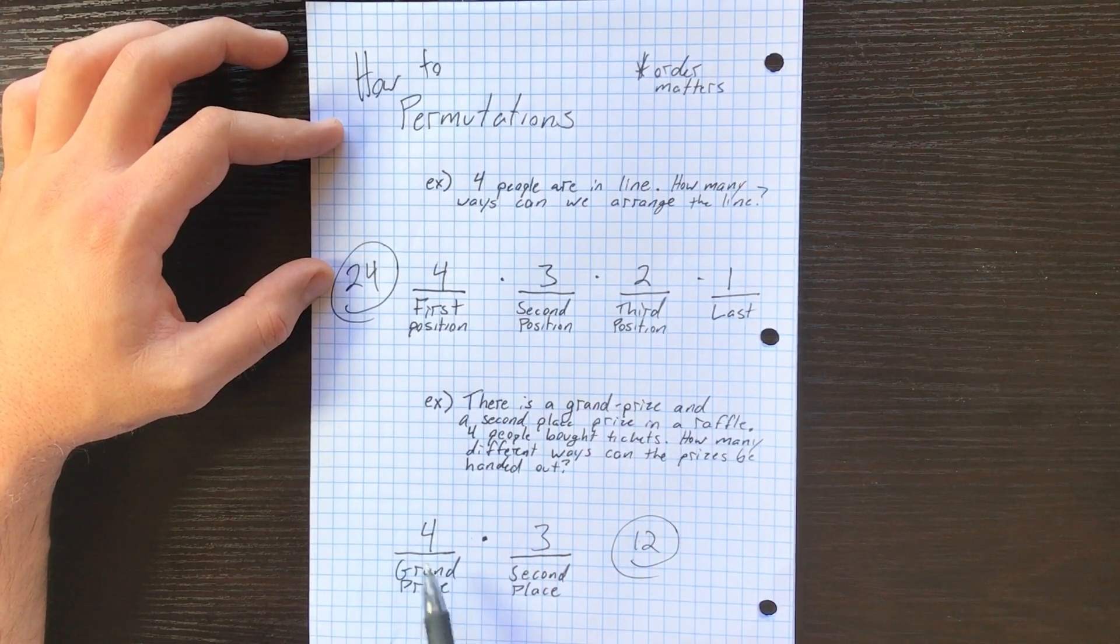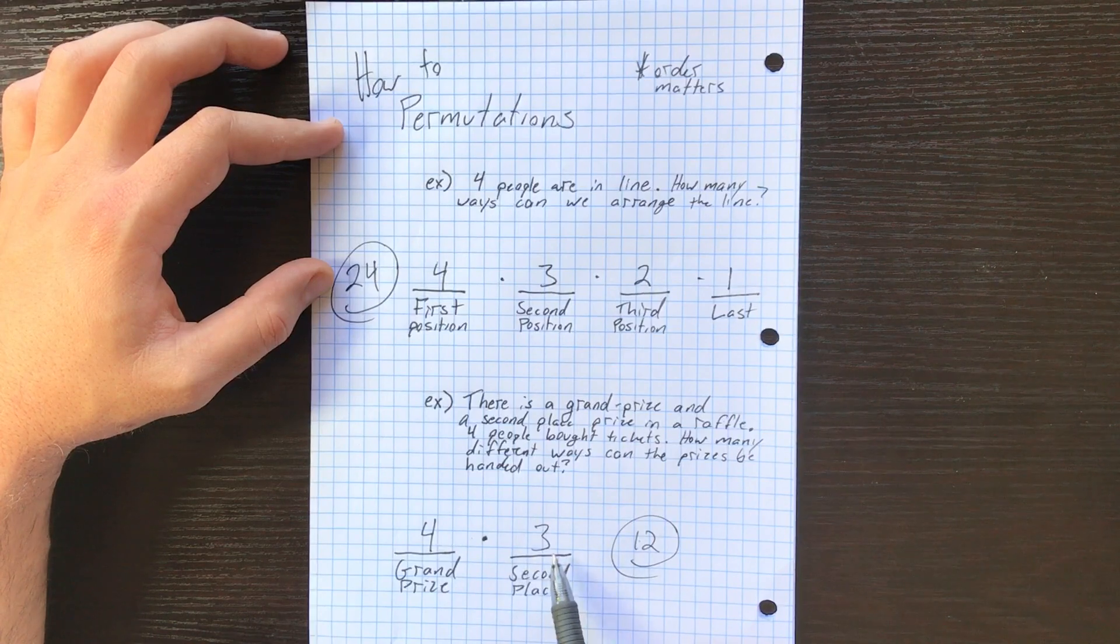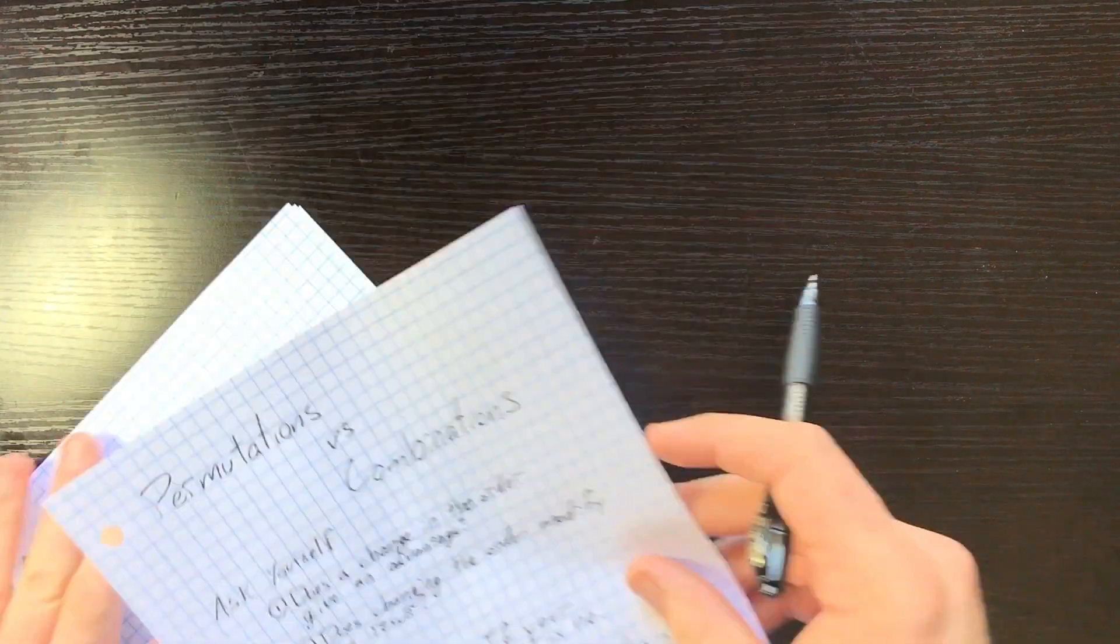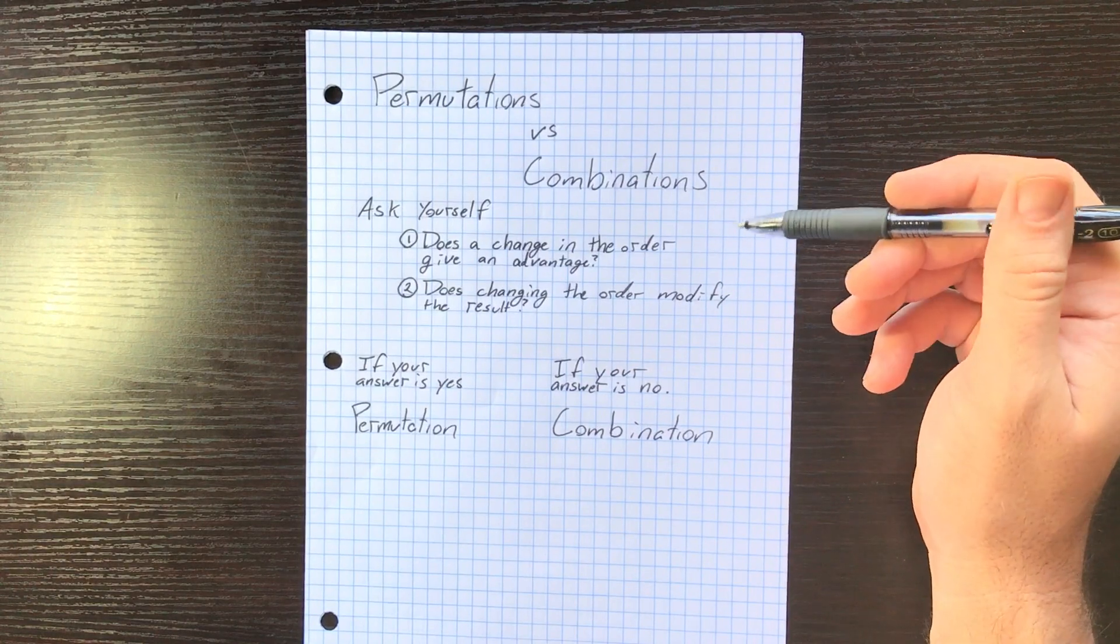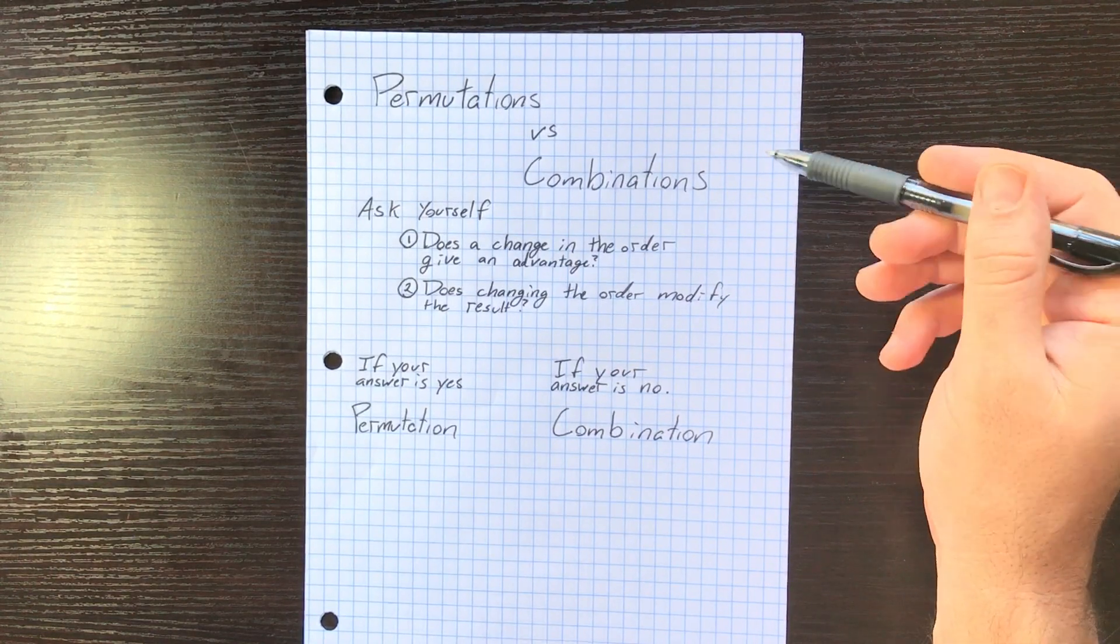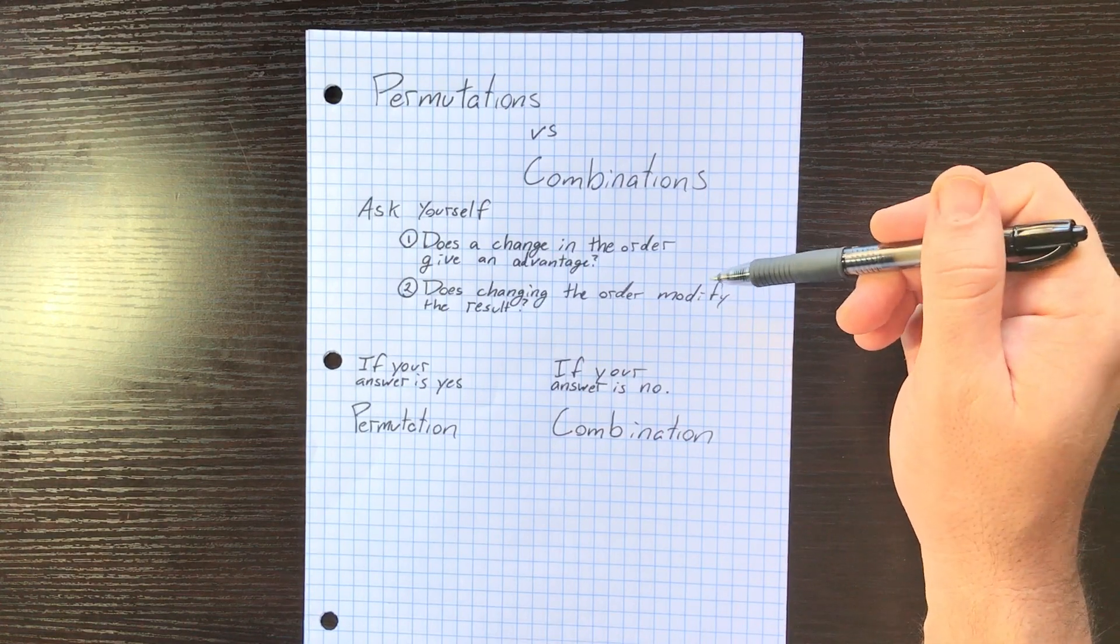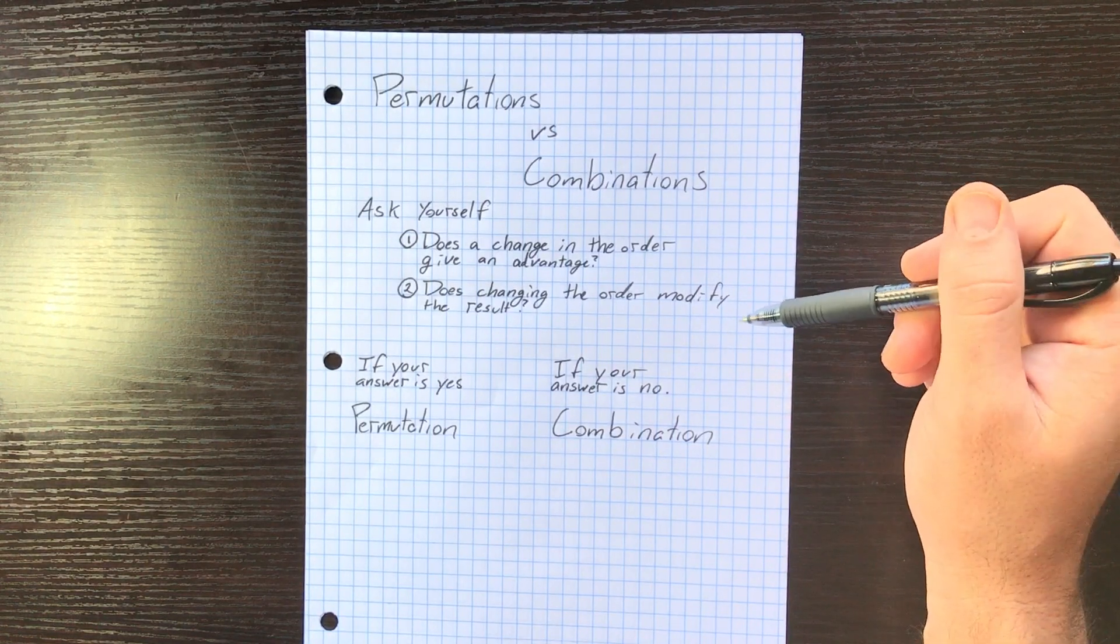Then we decide how many people are available to be selected for each position. Notice it goes 4 to 3 to 2 to 1. And in this one with only two positions we pick, we only have three to select from, and we multiply them. That's how we do permutations. So how do we tell the difference between a permutation and a combination?